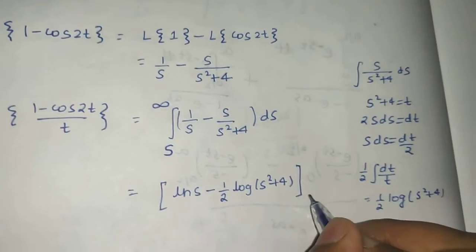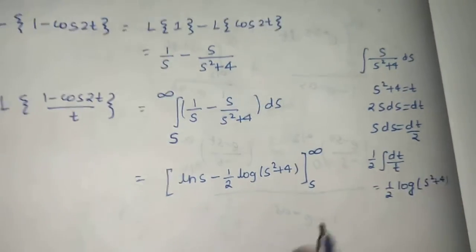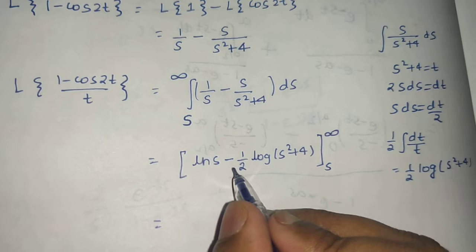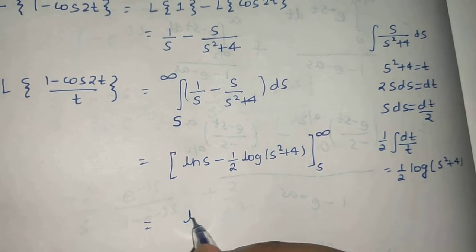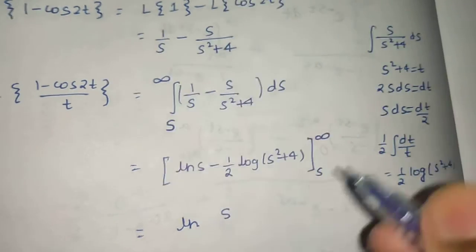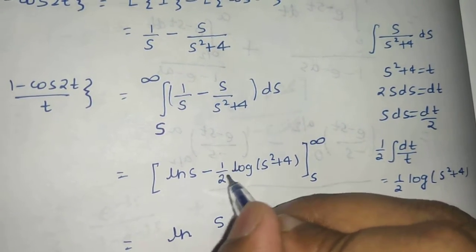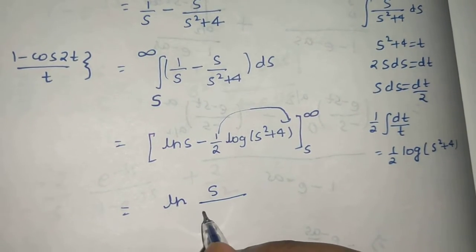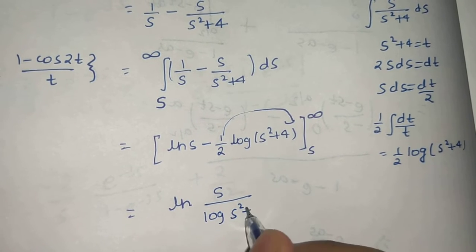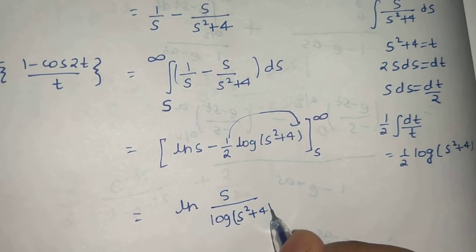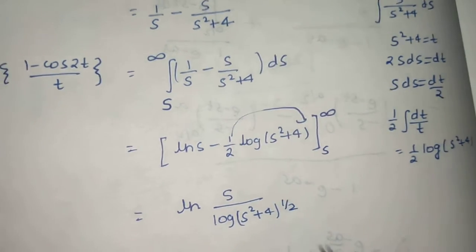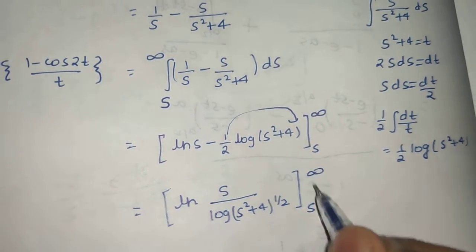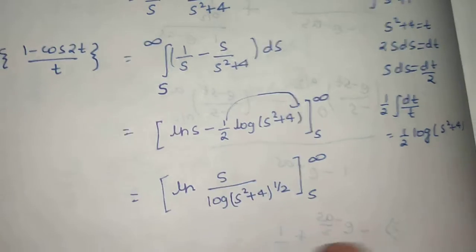This is evaluated from s to infinity. We can apply the logarithm property that log a minus log b is log(a/b). Before applying that, we send the 1/2 to the power. So this becomes log s minus log(s² + 4) to the power half, evaluated from s to infinity.